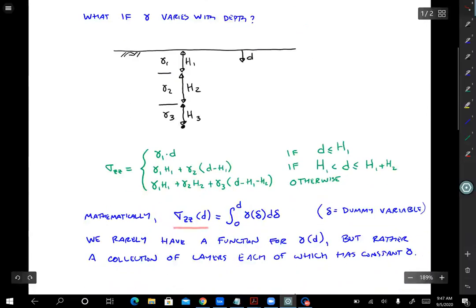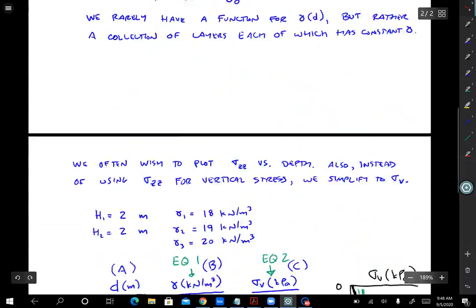Now, the problem with this equation is that we rarely have a function for gamma of depth. We wouldn't say like gamma is equal to mx plus b or something like that, where m and b are constants. What we usually have is something more like this, where we have discrete layers each with a uniform unit weight. So usually we do this integration numerically rather than in closed form. So that's what we've done here with this set of if statements in here in the middle. That's a numerical integration.